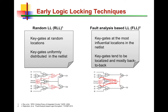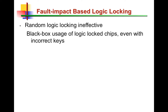In fault analysis-based logic locking, which we developed a few years back, the idea is to insert key gates and ensure that the outputs are corrupted, with the corruption level controlled by choosing key gate locations judiciously. We proposed this because random logic locking could be ineffective when an attacker uses the logic-locked chip as a black box — even with incorrect keys, if the corruption level is insufficient, chip outputs could be almost correct, allowing the attacker to exploit the chip.